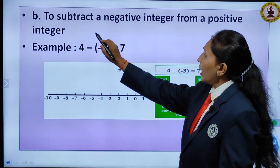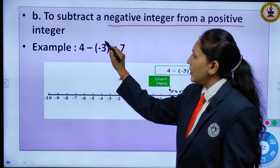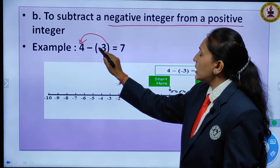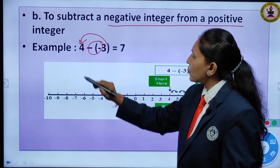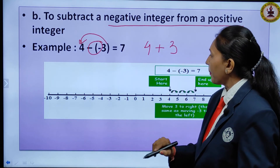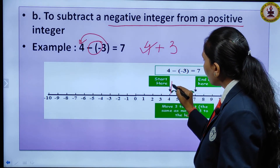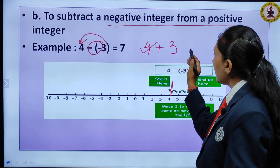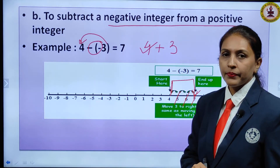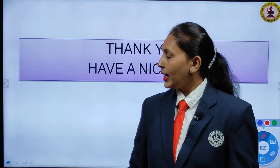To subtract a negative integer from a positive integer: for example, 4 minus minus 3. Two minus signs together become plus, so it becomes 4 plus 3. Start at 4 on the number line. Move 3 steps to the right: 1, 2, 3. You reach 7. So 4 minus minus 3 equals 7.